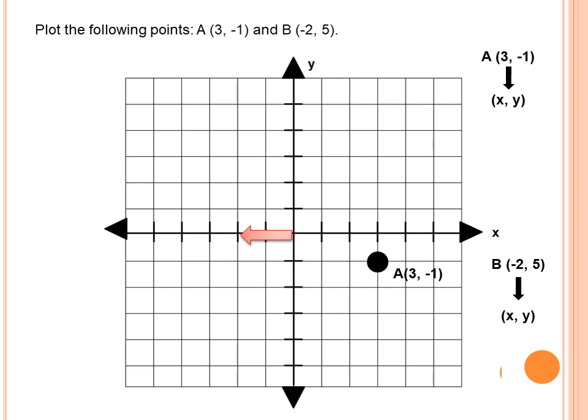Next, the y-coordinate is positive 5. Positive values on the y-axis are upward, or above 0. So from the x-axis point, we go 5 units upward, and that is our point B.